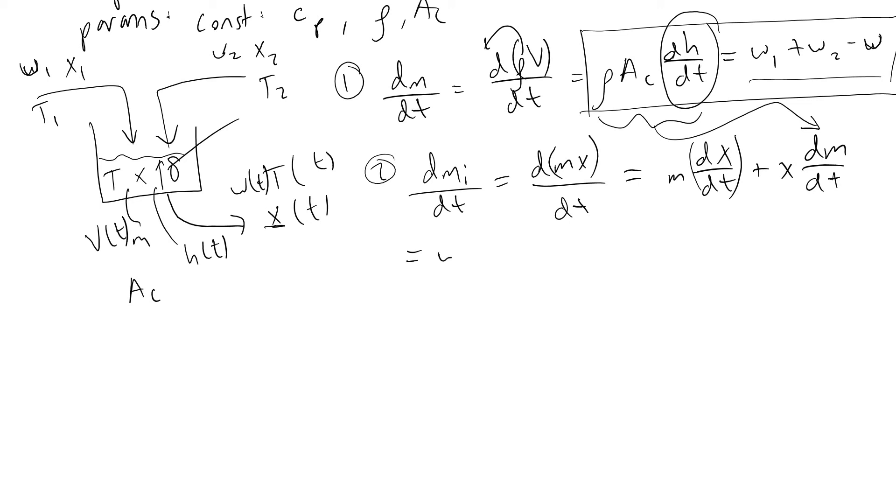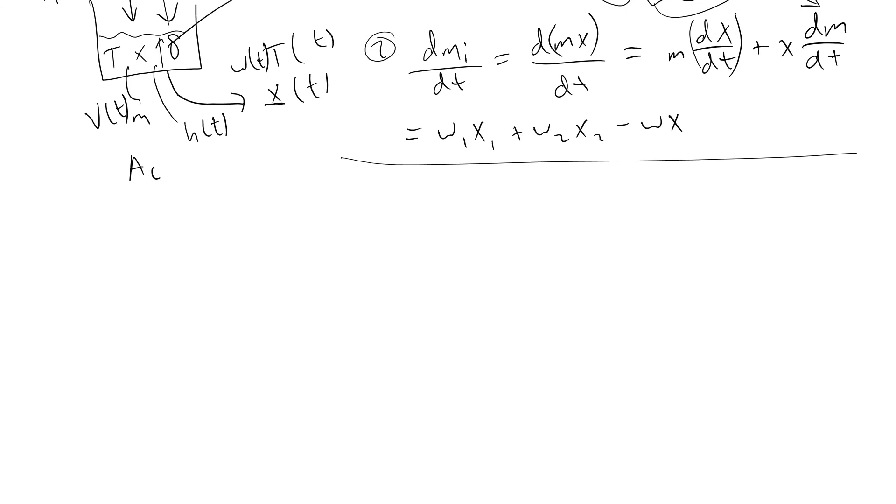The right-hand side in minus out plus generation equation is w1 times x1 plus w2 times x2 minus w times x. This second equation is another step toward evaluating how an output evolves over time.